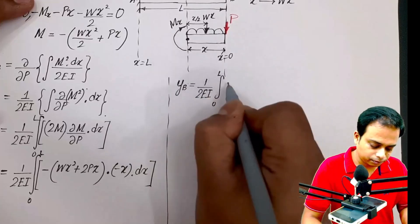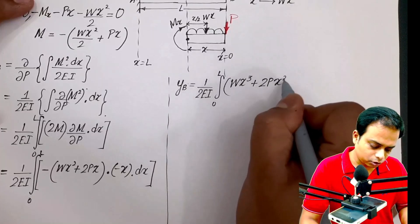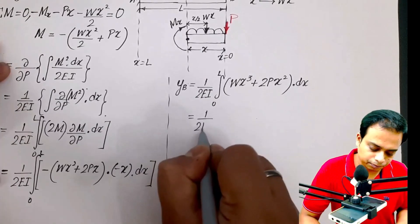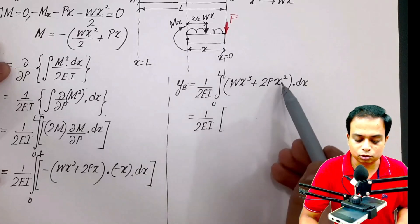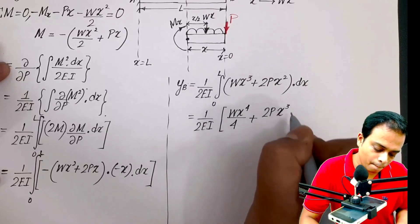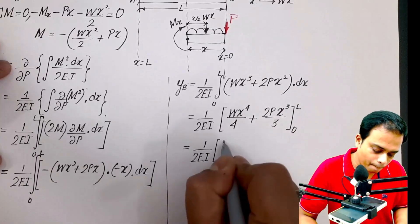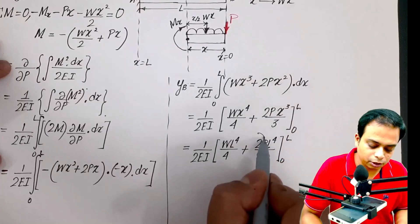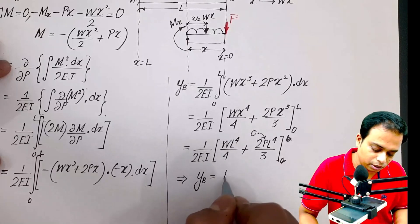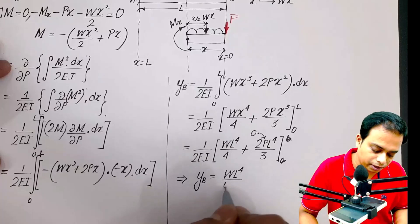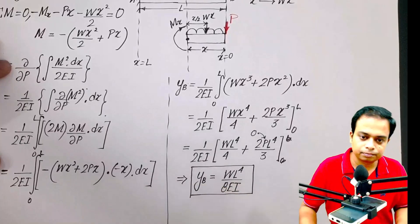yb is equal to 1 over 2EI, integration 0 to L, wx cube plus 2px square. Please note: x cube will become x power 4 by 4, x square will become x cube by 3. Now you just need to plug in the limits. The final value which we've got is deflection at the free end of the cantilever is equal to wL power 4 over 8EI. That's your final answer.